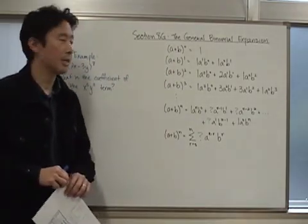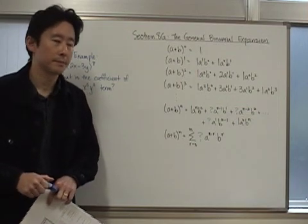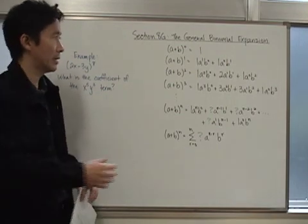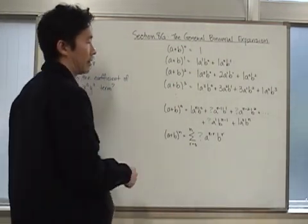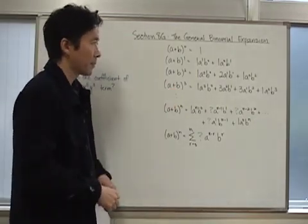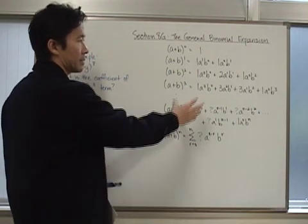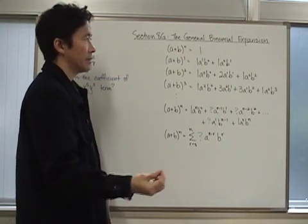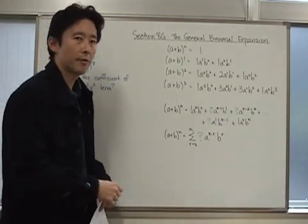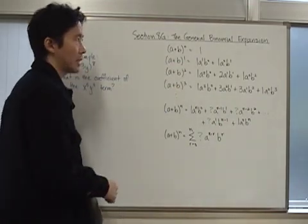Hello everyone, let's go ahead and take a look at Section 8G, which is called the General Binomial Expansion. In the previous lesson, we looked at how to generate the expansion for any particular positive integer exponent of a binomial raised to that exponent. And now what we want to do is take that expansion and see if we can come up with a simple and elegant form to take care of all expansions for any positive integer n. So let's take a look at what we had from the previous section.